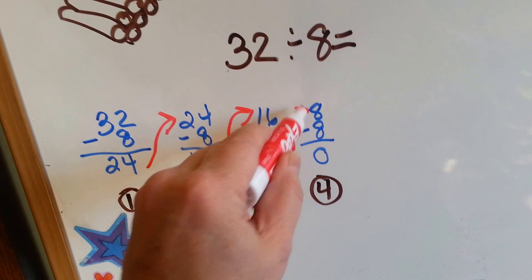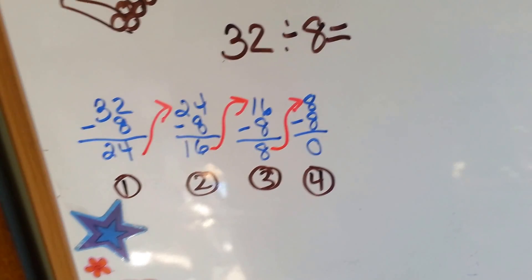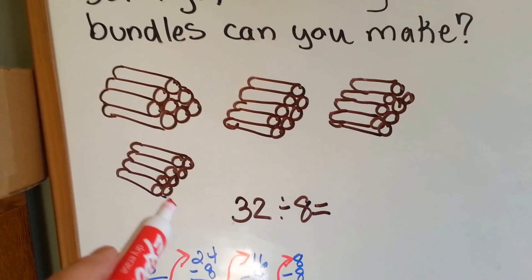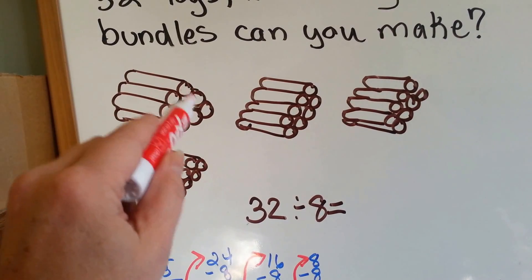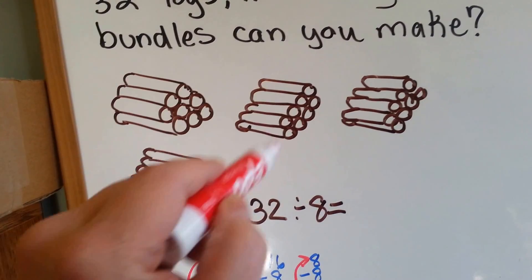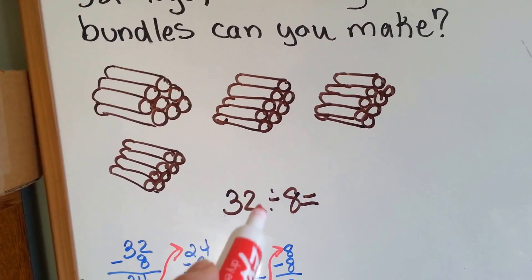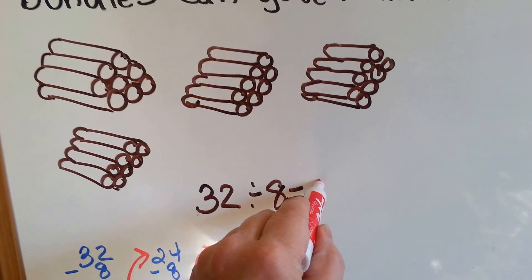And then the last one, we have 8 take away 8 is 0. And we get it 1, 2, 3, 4 times. So look, we have 4 bundles of wood. We have 8 here, 8 here, 8 here, and 8 here. That means we have 32 logs. 32 divided by 8 is 4.